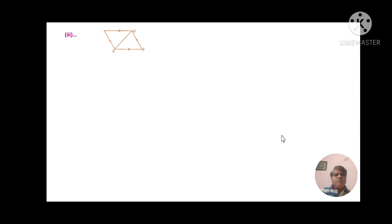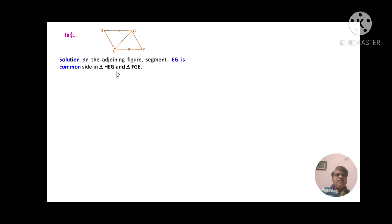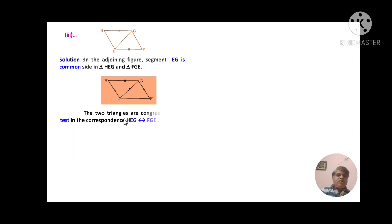Problem number three: segment EZ is common in triangle HEZ and triangle FZE. Marking EZ as common, the two triangles are congruent by the side-side-side (SSS) test, and the correspondence is HEZ to FZE.